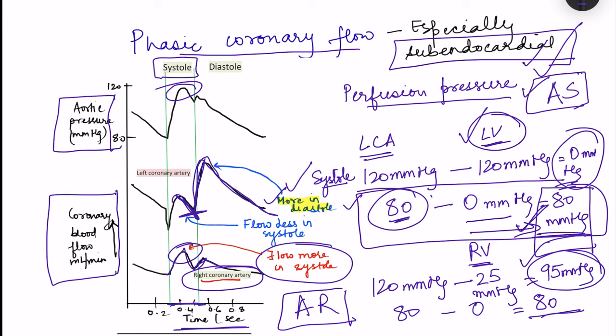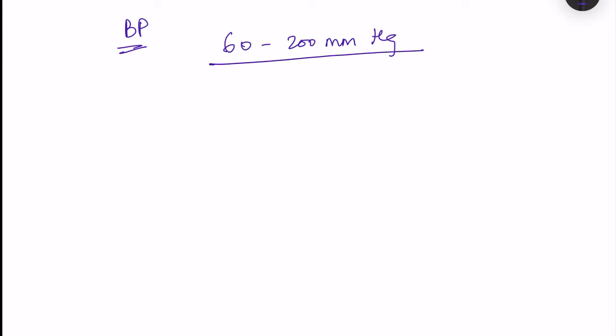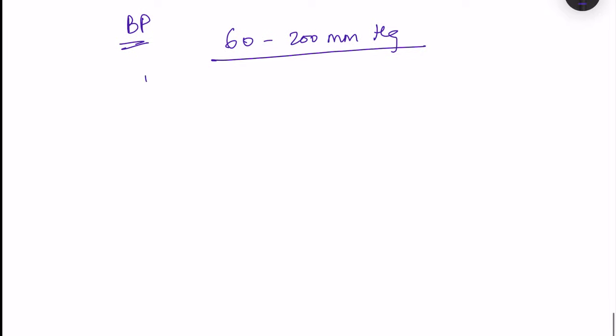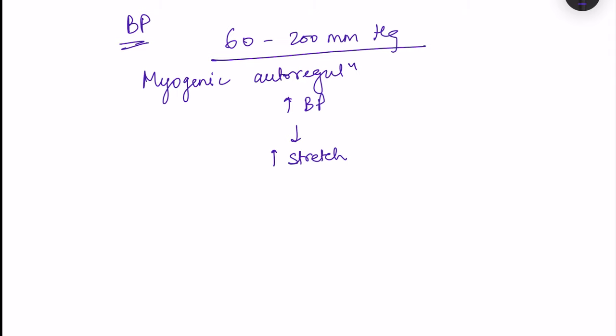Before ending, the concept of autoregulation: suppose heart activity is not changing but blood pressure increases. This will increase perfusion pressure and would be expected to increase coronary circulation. However, between 60 to 200 mmHg of mean arterial pressure, coronary blood flow remains constant if heart activity doesn't change. This is because of myogenic autoregulation — when blood pressure increases, there is increased stretch of the vessel wall.